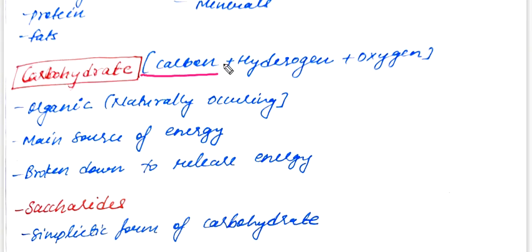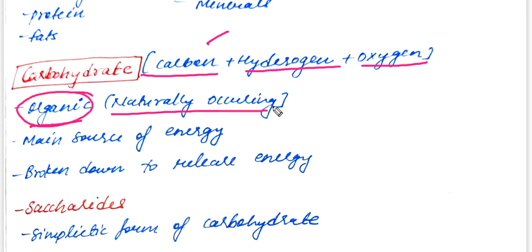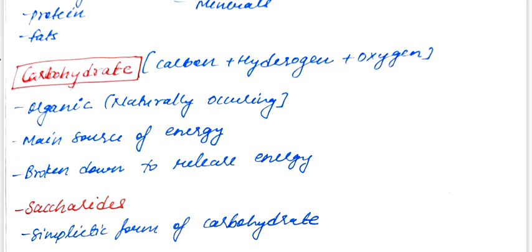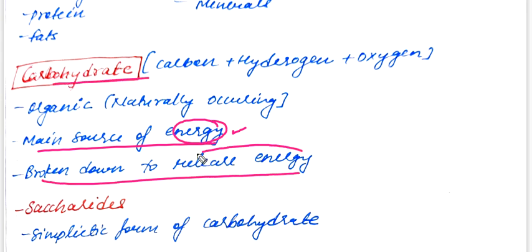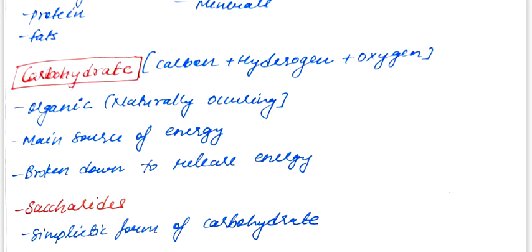Carbohydrate is made of carbon, hydrogen, and oxygen, and it is organic — meaning it is a naturally occurring compound. Carbohydrate is the main source of energy in the body. It is broken down to release energy.